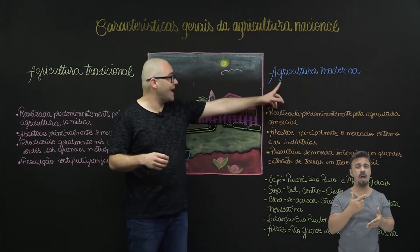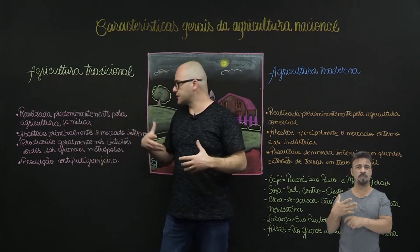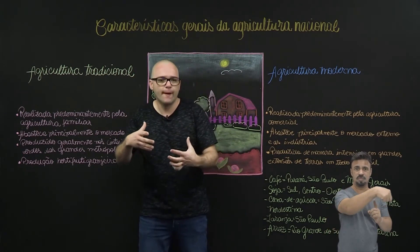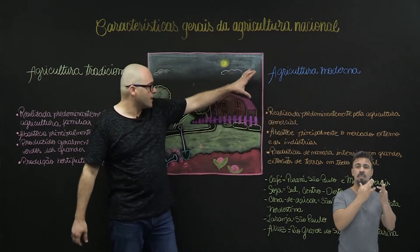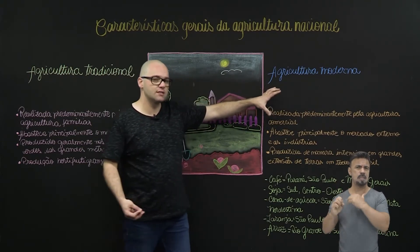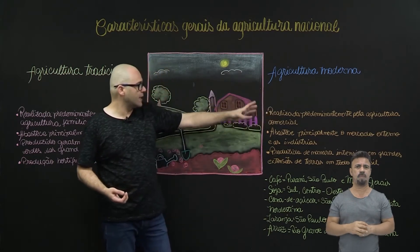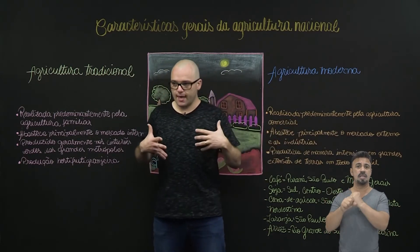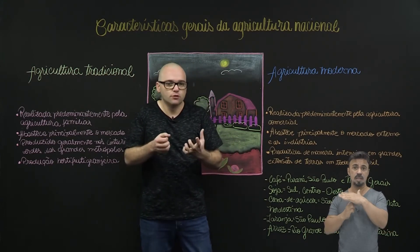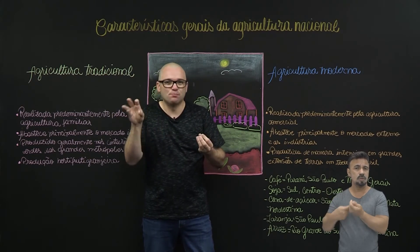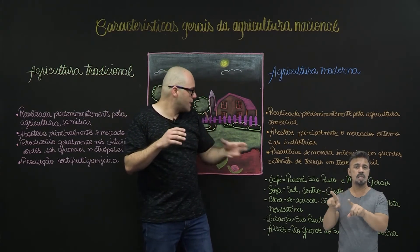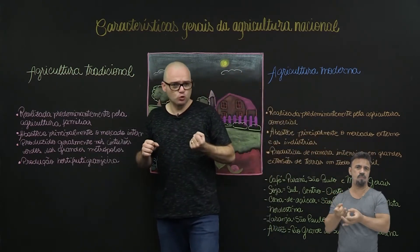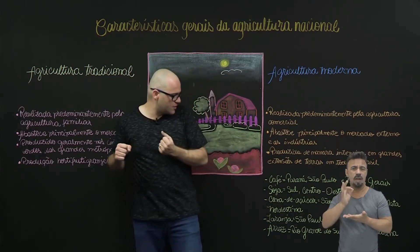O que vai focar mais vai ser a agricultura moderna. Diferente da tradicional, que já tem técnicas tradicionais, abastece o mercado interno, produz nos cinturões verdes e tem mão de obra mais simples e familiar, aqui já são grandes empresas, grandes agroindústrias, grandes empreendimentos do agronegócio. A agricultura moderna é realizada predominantemente pela agricultura comercial. As grandes empresas agropecuárias vão gerar justamente essa economia agrária exportadora. O seu foco principal é abastecer o mercado externo. As grandes produções de soja, de café e de laranja são predominantemente pautadas para a exportação.